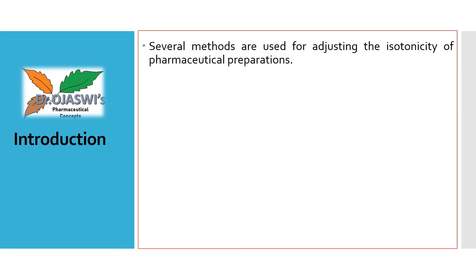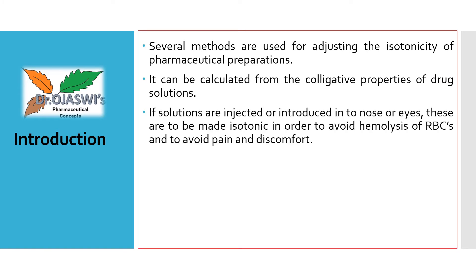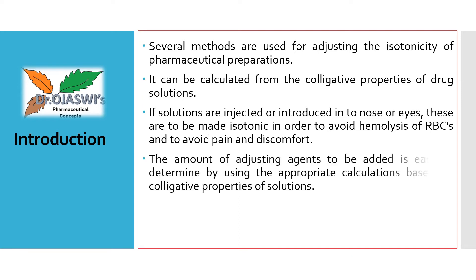There are several methods used for adjusting the isotonicity of pharmaceutical preparations. It can be calculated from the colligative properties of drug solutions. If solutions are injected or introduced into the nose or eyes, these are to be made isotonic in order to avoid hemolysis of the red blood cells and to avoid the resultant pain and discomfort. The amount of adjusting agents to be added is easy to determine by using the appropriate calculations based on colligative properties of solutions.